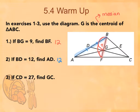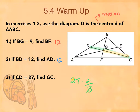And then the last one says CD. So now we're talking about a median, and it wants GC, which is the two-thirds part of it. So twenty-seven times two-thirds. Twenty-seven. For number one, BG is two-thirds?